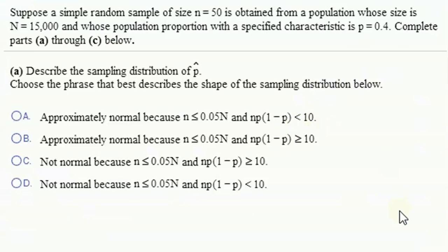Okay, so we have a simple random sample of size 50 obtained from a population whose size is 15,000, and the population proportion with specified characteristic is 0.4, so 40% of the population. The sampling distribution of p hat—p hat is our estimate of the proportion, also known as our sample proportion.